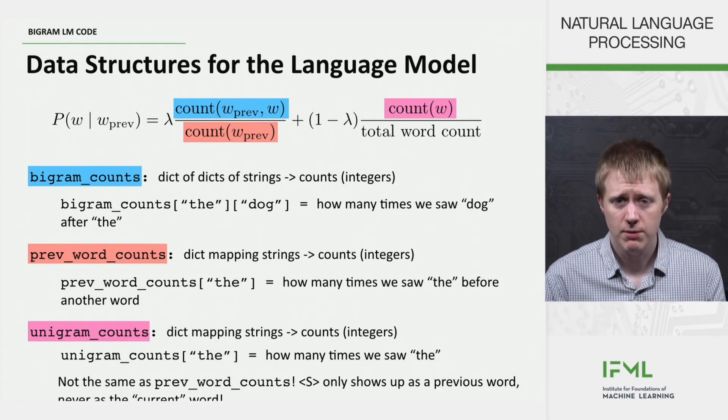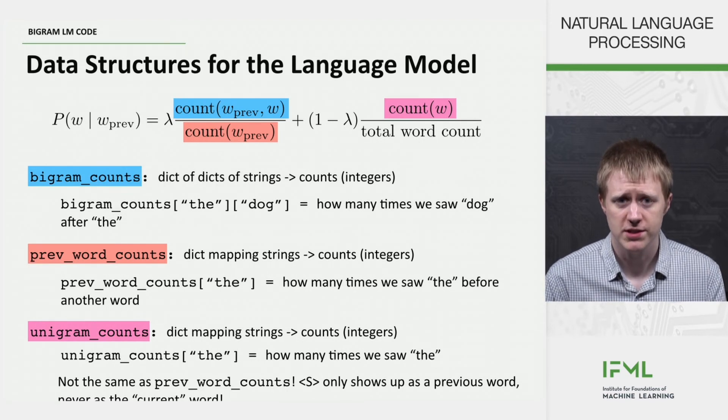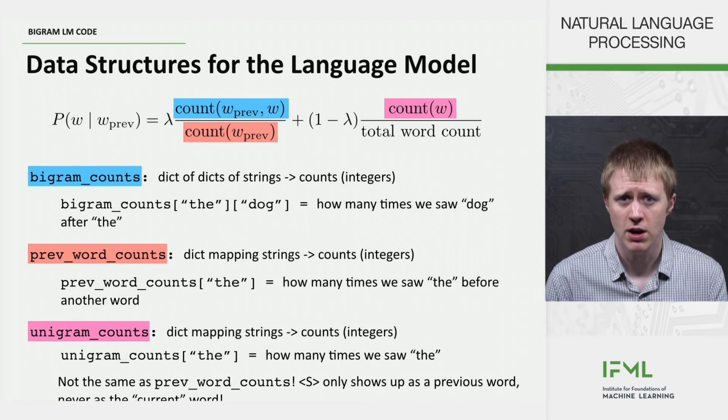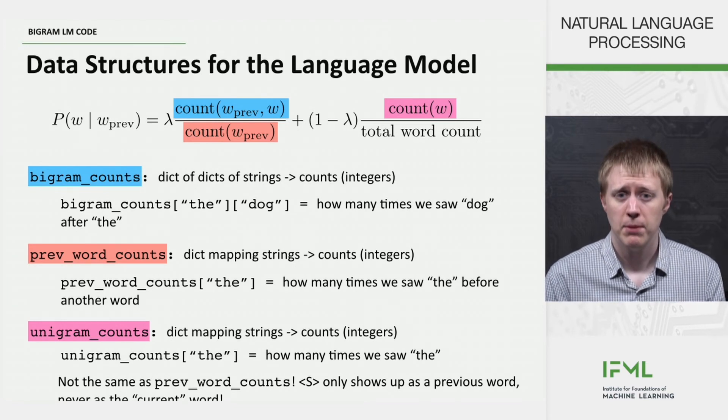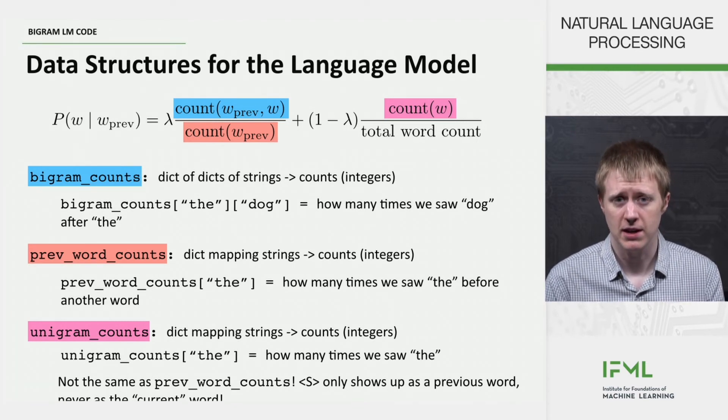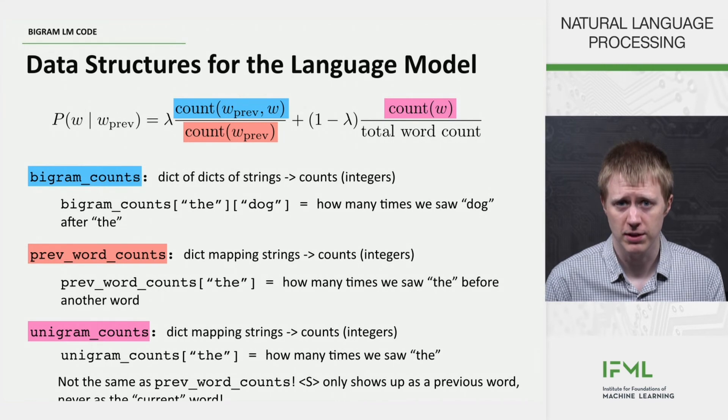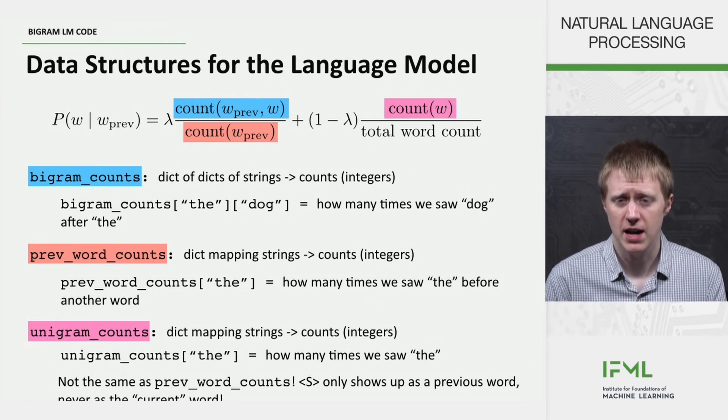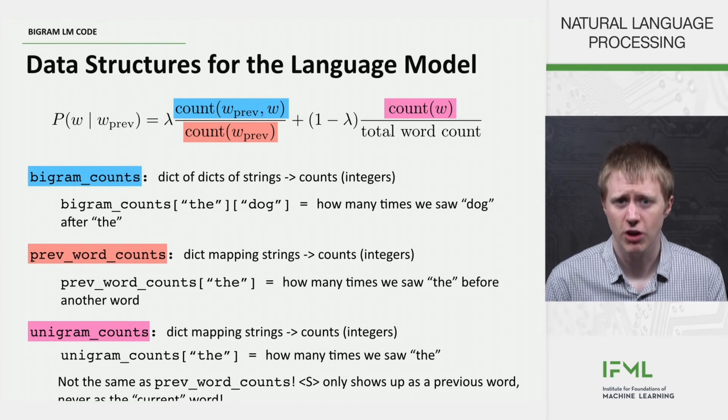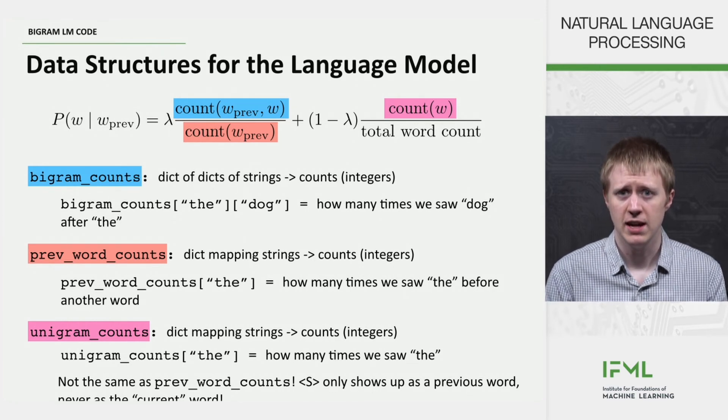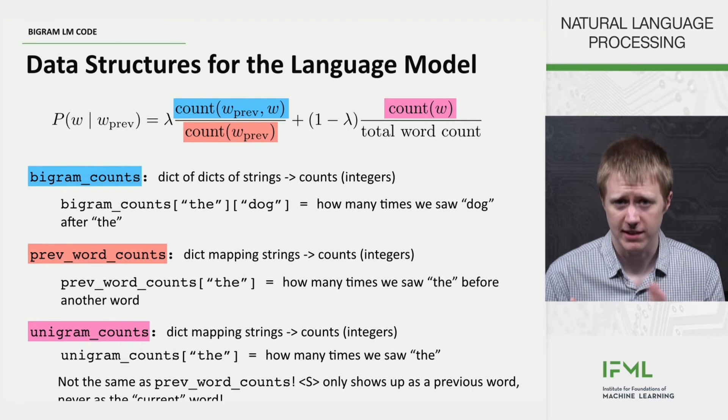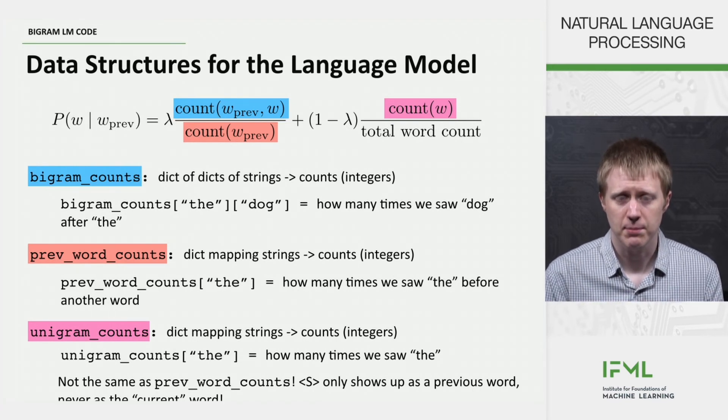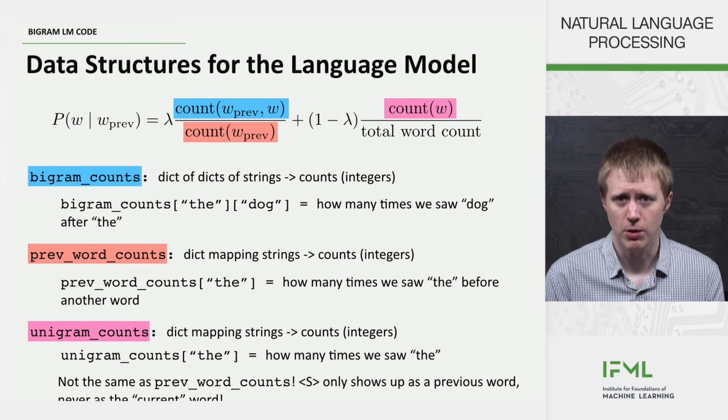And then finally we have unigram_counts here, which is very similar to prev_word_counts. And in fact these have the same value for most words. But they are slightly different because remember we have the start of sequence token. And that shows up as a previous word but not ever as a current word essentially. And so they're going to differ very slightly in that regard. So we do maintain these as separate data structures even though they capture most of the same stuff.